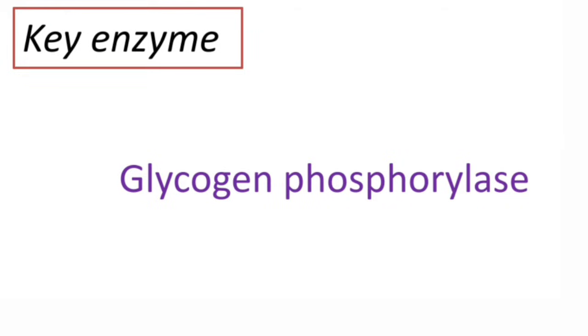The key enzyme of glycogenolysis is glycogen phosphorylase. This enzyme will decide the rate of glycogenolysis.